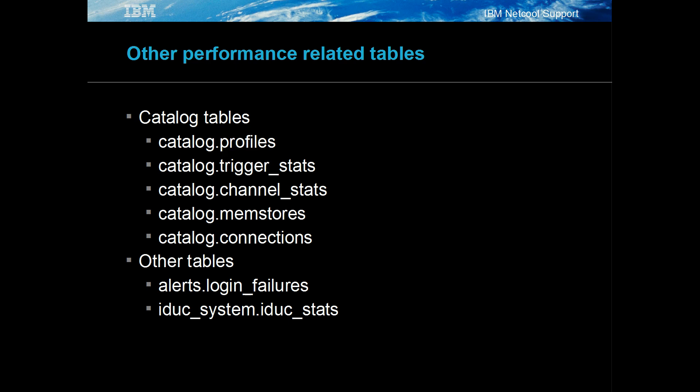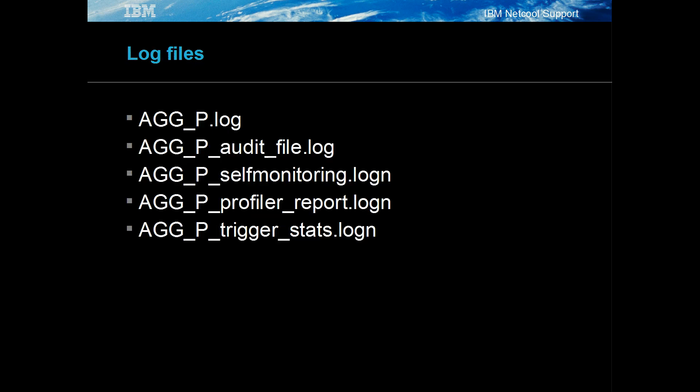catalog.memstores holds the hard disk and memory usage of the object server, with catalog.connections listing the current object server connections. Other tables, such as alerts.login.failures and the stats tables, can help to identify other performance issues.